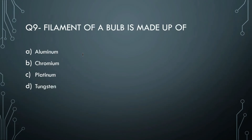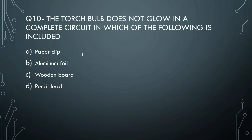Next question: the filament of a bulb is made up of which material - aluminium, chromium, platinum, or tungsten? The right answer is tungsten. The filament is made up of tungsten. When electricity flows through it, the tungsten heats up and generates light.